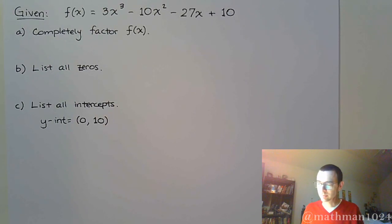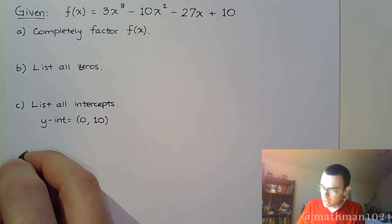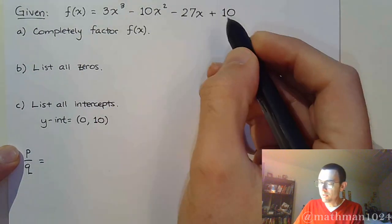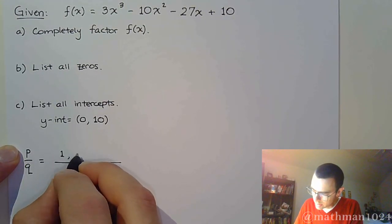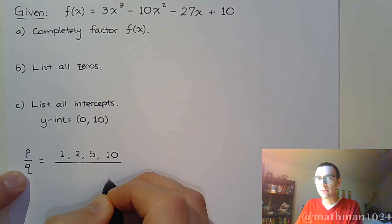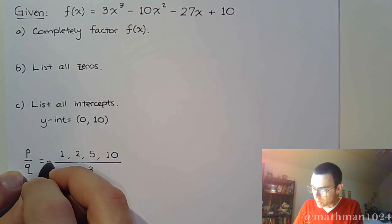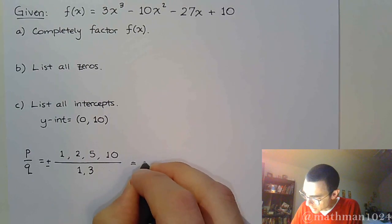To find everything else, we need to use the Rational Zeros Theorem — the P over Q method. P represents factors of the constant term 10, which are 1, 2, 5, and 10. Q represents factors of the leading coefficient 3, which are 1 and 3. We use plus or minus because we don't know the sign.